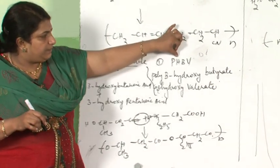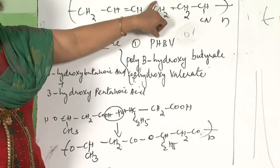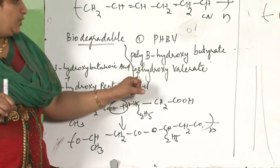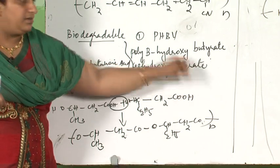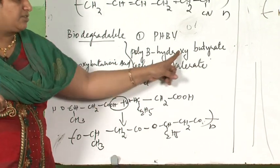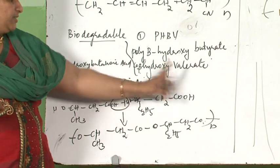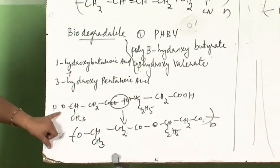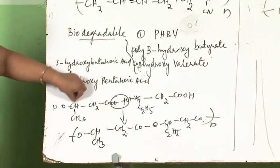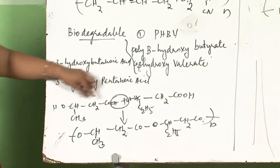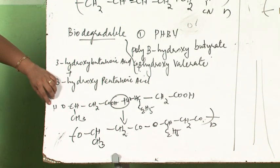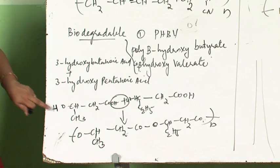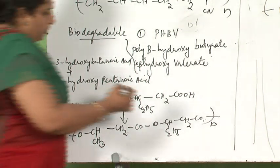PHBV — this can be degraded by bacteria when it goes into the earth. PHBV stands for poly-beta-hydroxybutyrate-co-beta-hydroxyvalerate. Its monomers are 3-hydroxybutanoic acid — butanoic acid with a hydroxyl group at the third carbon position.